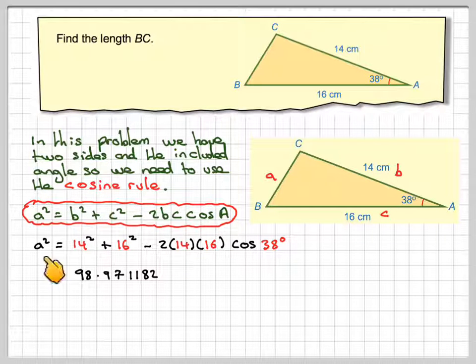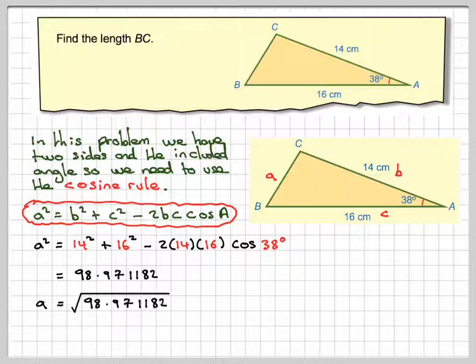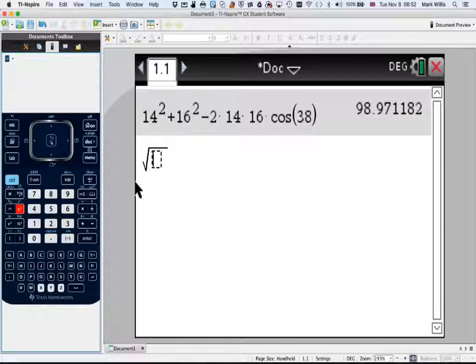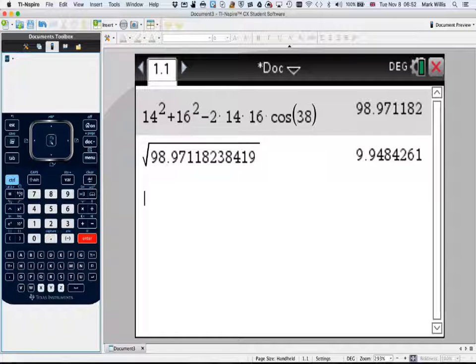However, that gives me A squared, so I actually want the value of A. So I need to take the square root of that. So jumping back over to my calculator, all I need to do now is control the square root, and then I don't need to type it in, just put in the answer for the previous part. Press the arrow key and press enter, and I get 9.9484261.